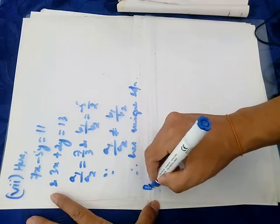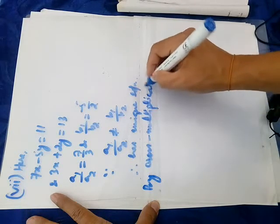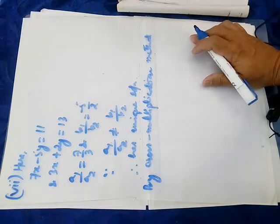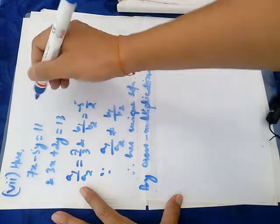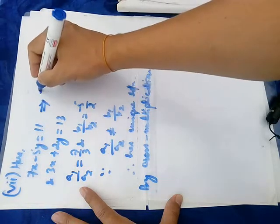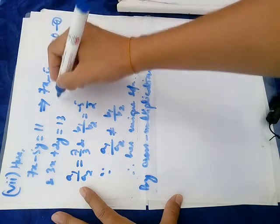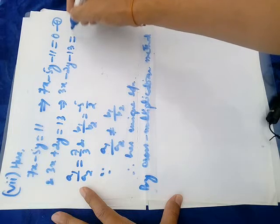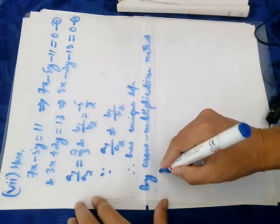So we apply the cross multiplication method. The algebraic methods include substitution, elimination, and cross multiplication. We write the equations in standard form — 7x minus 5y minus 11 equals zero is equation one, and 3x plus 2y minus 13 equals zero is equation two.